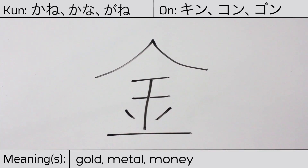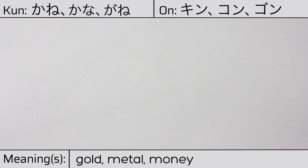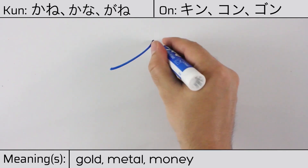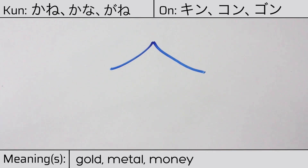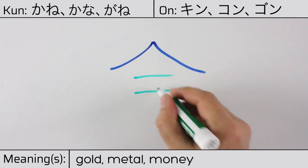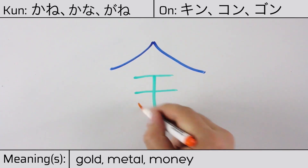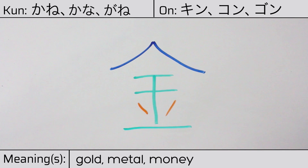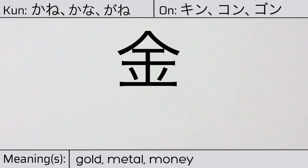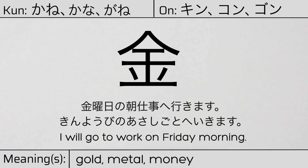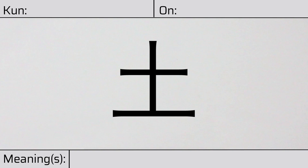This character is made up of the following radicals or parts: the hat radical hitoyane at the top, the kanji character meaning king in the middle, and two dots one on either side. You can remember this kanji by the fact that it looks like a shiny coin if you draw a circle around it. Our example sentence is: 金曜日の朝、仕事へ行きます — I will go to work on Friday morning.